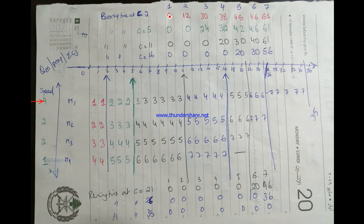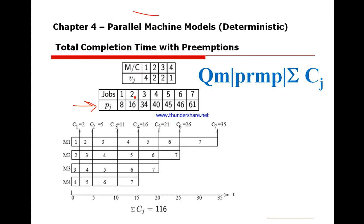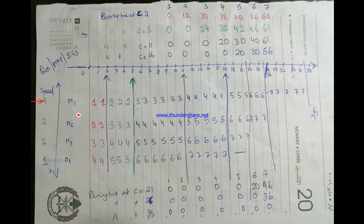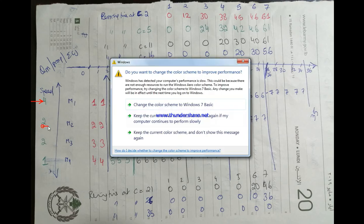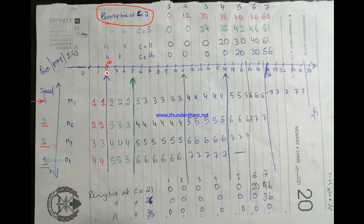Job one's remaining processing time is 8 hours before we start. On machine one, it takes two cells to complete. Job two is assigned to machine two — in two hours of time we do four units of machining. Job three gets four slots on machine three. Job four on machine four processes at normal speed — just one unit of time per slot. We draw the border here and calculate the remaining times.